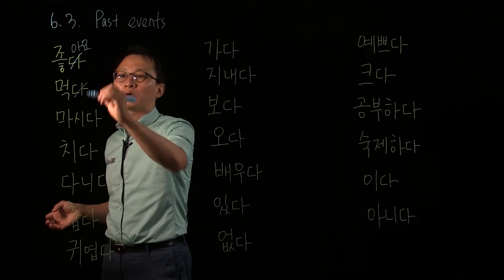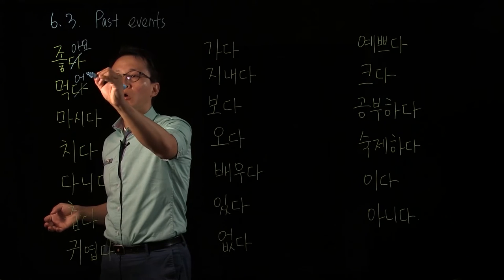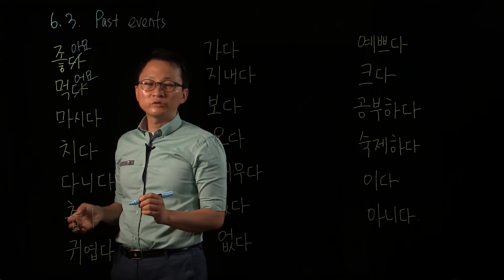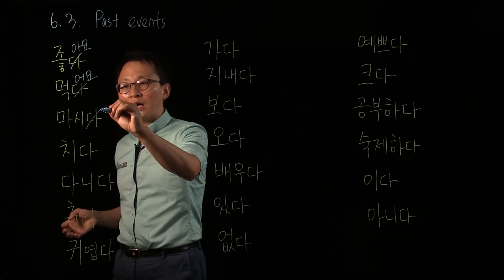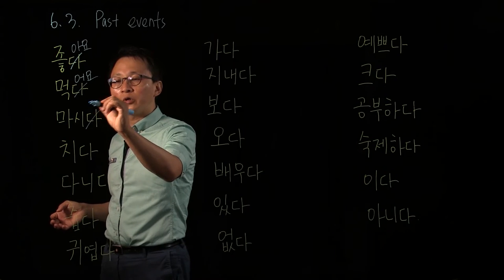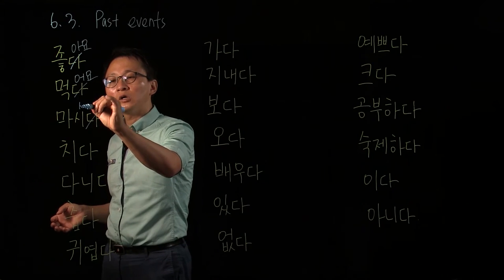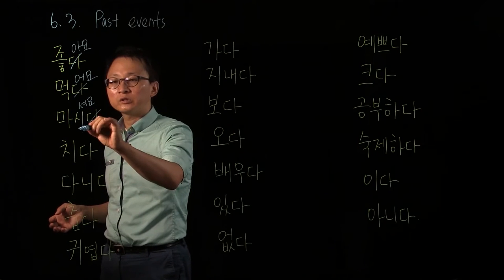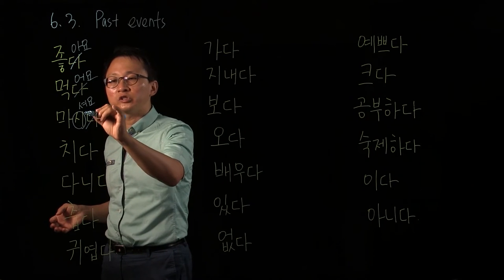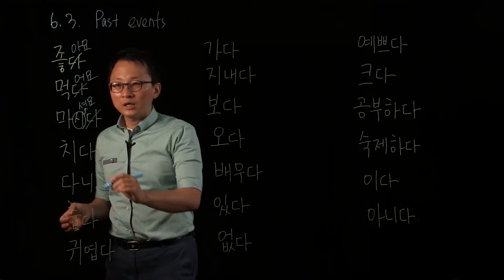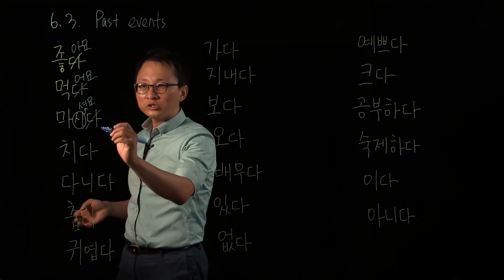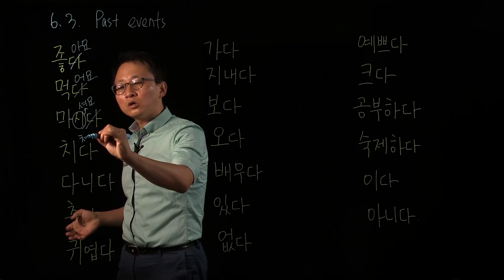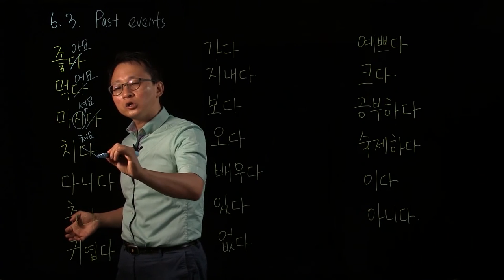먹다 — to eat. What about 먹다? 먹어요, 그렇죠? 마시다 — to drink. We don't need 다. And 시 plus 어요 makes 마셔요, right? So 마셔요 — the 시 changes to 셔 here. And 치다 — 이 ending words change into the 여 form, right? 처요. That's the conjugated form of 치다.